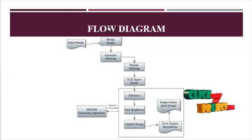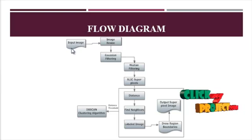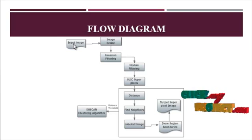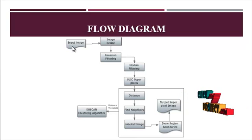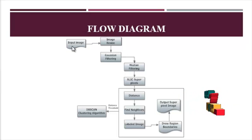Now we are going to discuss the flow diagram of our project. First one is image acquisition. Here we get one input image. The first stage of any vision system is the image acquisition stage. Image acquisition is the digitalization and storage of an image, first capturing the input image from the source file by using uigetfile and imread function.